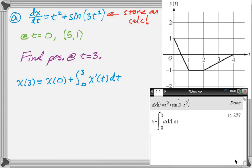So I stored the derivative as dx, so dx of t I stored. And then I did 5 plus the integral from 0 to 3 of dx/dt dt. So I know that the x coordinate at t equals 3 is 14.377.